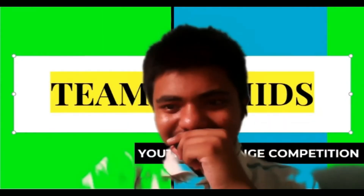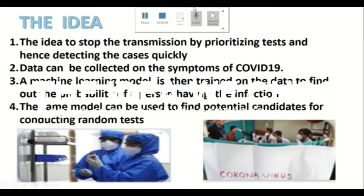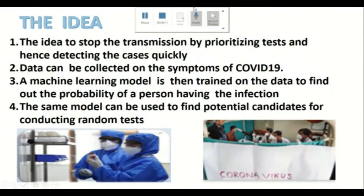We held many meetings for implementing the ideas for the competition. Finally, we chose the idea of COVID probability to stop the transmission by prioritizing tests and hence detecting cases quickly. Data can be collected on the symptoms of COVID-19, and a machine learning module is then trained on the data to find out the probability of a person having the infection. The same module can be used to find out potential candidates for conducting random tests.